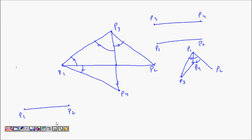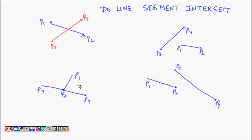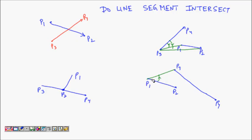Now we write the algorithm. One case we didn't consider is if a point lies exactly on the other line. For example, P2 might be on the line of P3P4, and then they will still intersect. We also cover the case where if with respect to P1P2, both P3 and P4 are counterclockwise, they will not intersect — both points are in the same direction.